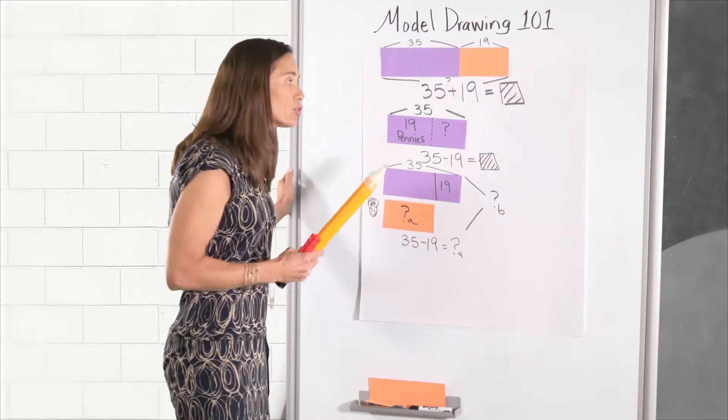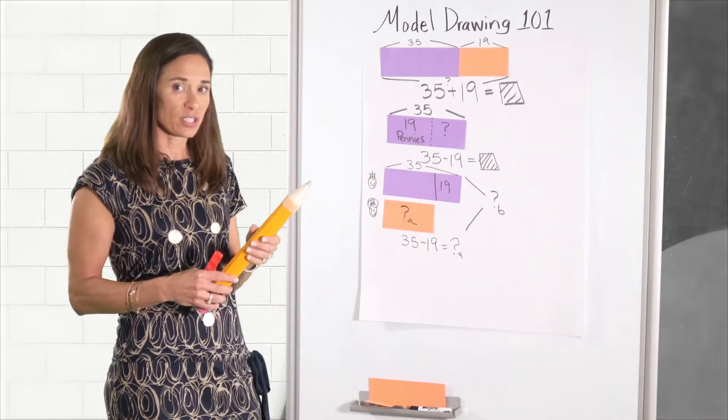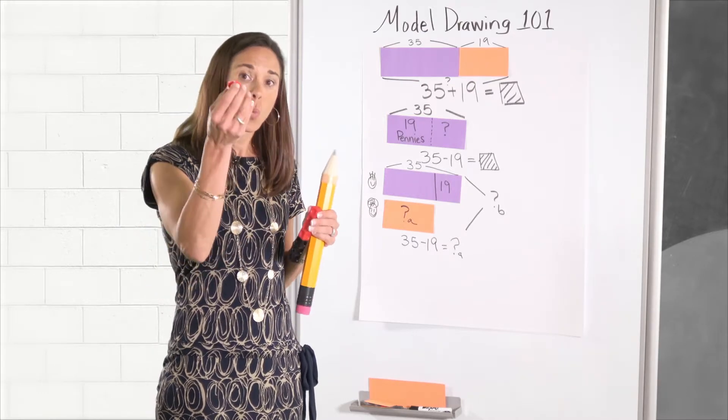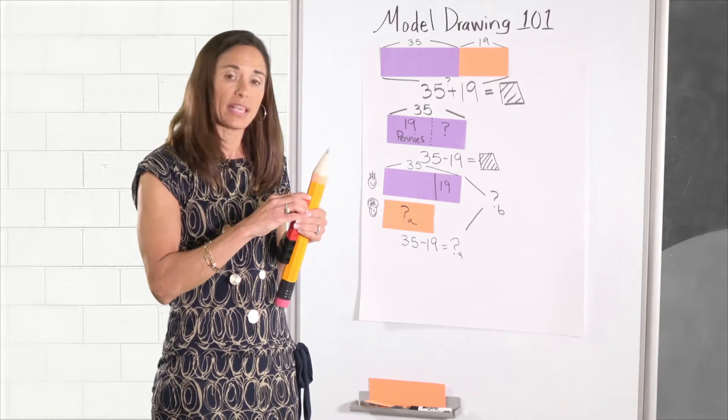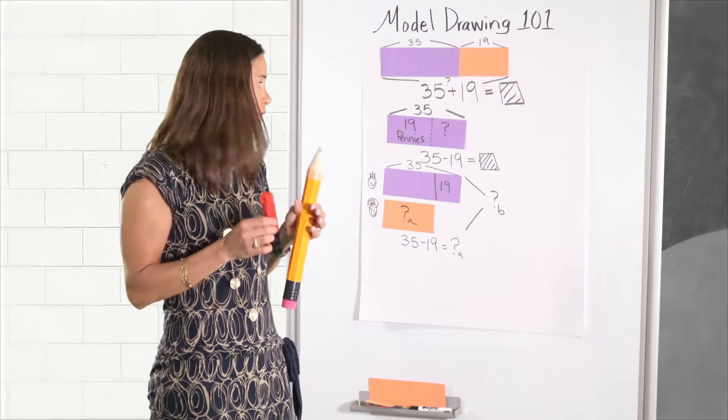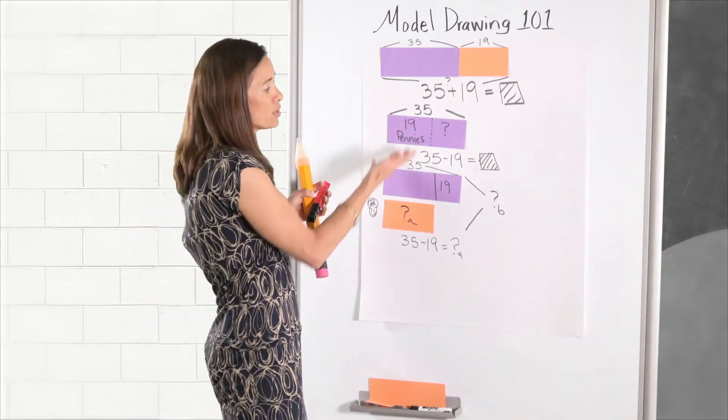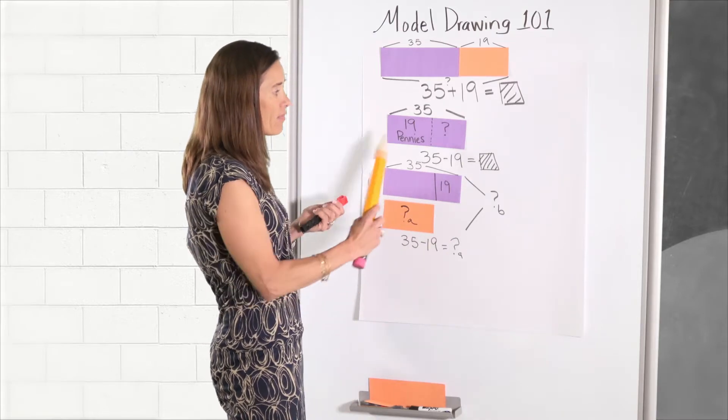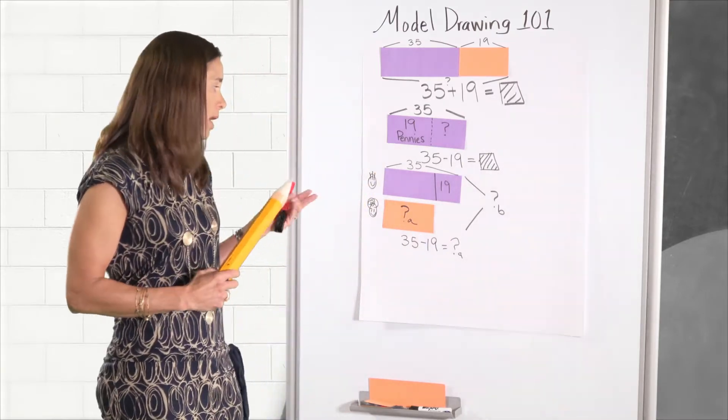This also represents a part-whole but a different action or problem structure. And then the comparative idea. So this is model drawing 101 to just describe what a bar model is, how it starts with one-to-one correspondence in the younger grades in using cubes, and then it moves to the older grades and we see things like the comparative and the part-whole model as well.